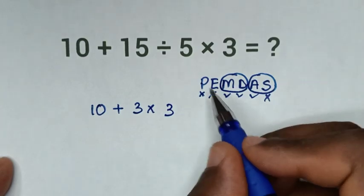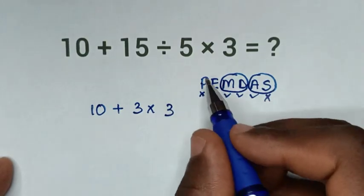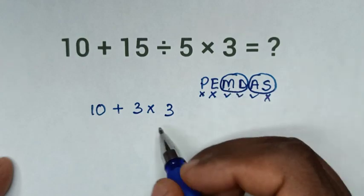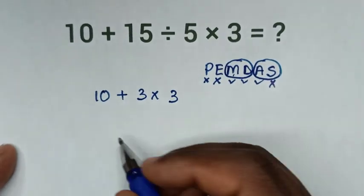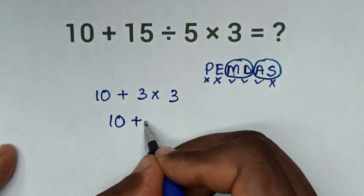Then, after finishing with the division, the multiplication remains. We'll deal with this multiplication of 3 times 3, which is 9. So it will be 10 plus 9.